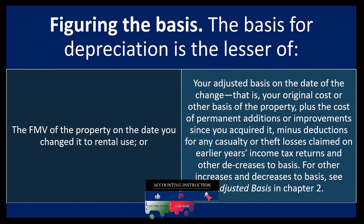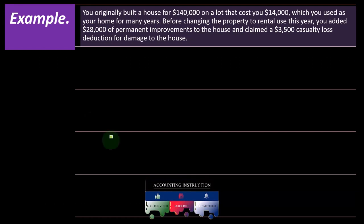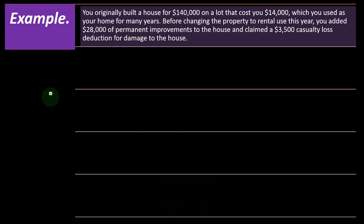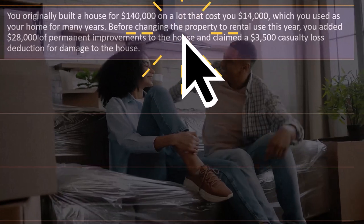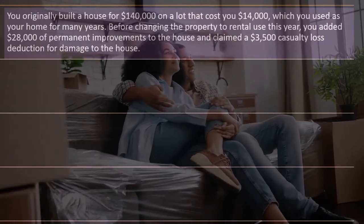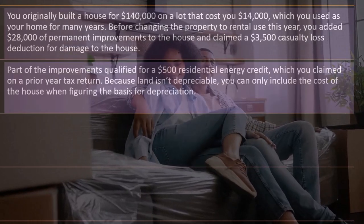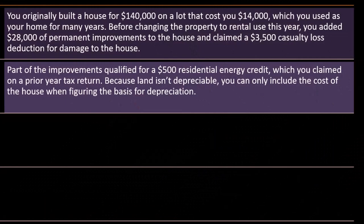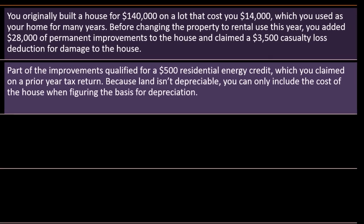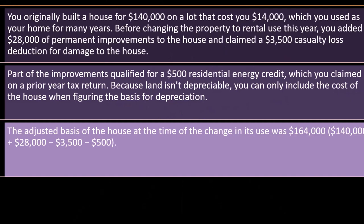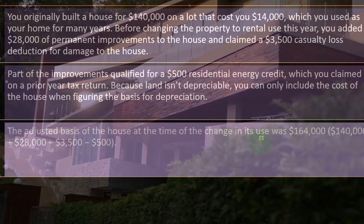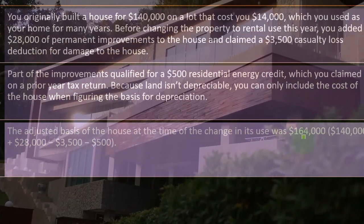For increases and decreases to basis, you can see adjusted basis in chapter two. Example: you originally built a house for $140,000 on a lot that costs $14,000, which you used as your home for many years before changing the property to rental use. This year, you added $28,000 of permanent improvements to the house and claimed a $3,500 casualty loss deduction for damage to the house. Part of the improvements qualifies for a $500 residential energy credit, which you claimed on a prior year tax return. Because land isn't depreciable, you can only deduct the cost of the house when figuring the basis for depreciation. So the adjusted basis for the house at the time of the change in its use was $164,000.